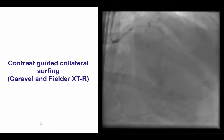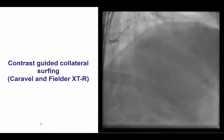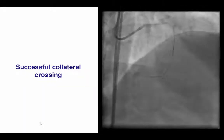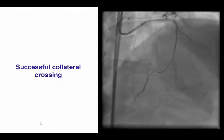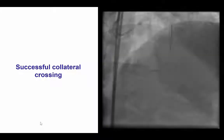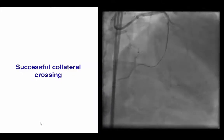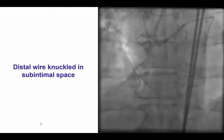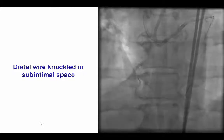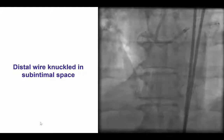A CARAVAL microcatheter was advanced to a septal branch, followed by both surfing as well as contrast injection, and finally we were able, using a FIELDER XTR guide wire, to cross from the LAD into the right coronary in the right posterolateral branch. We then advanced the CARAVAL all the way to the distal right coronary artery, and then started knuckling with a FIELDER XTR guide wire and a PILOT 200 into the mid-right coronary artery.